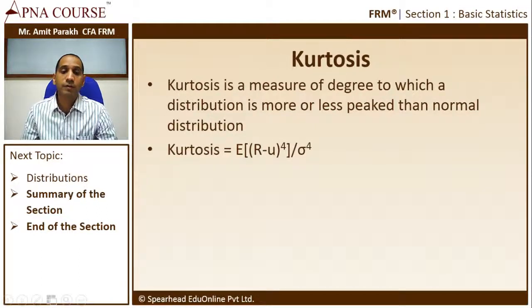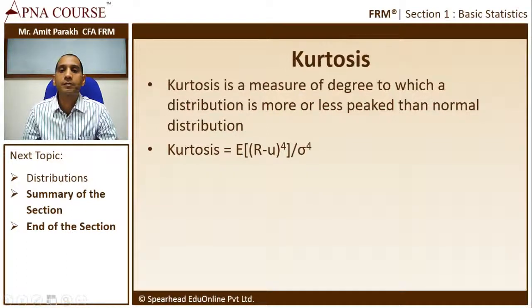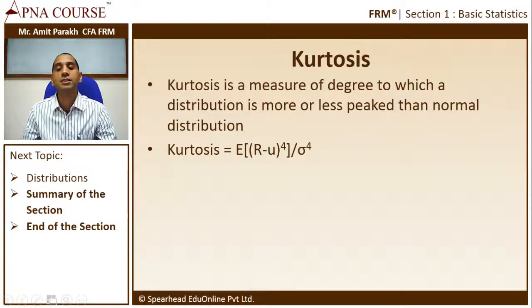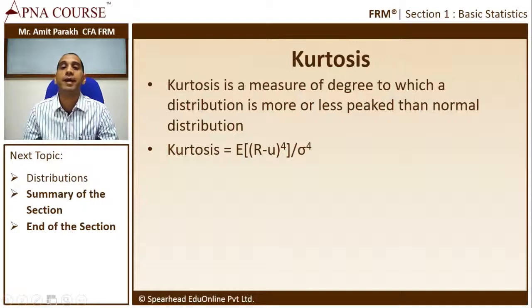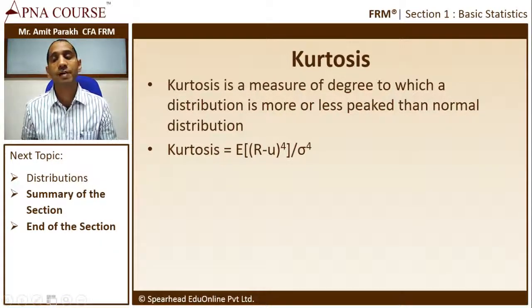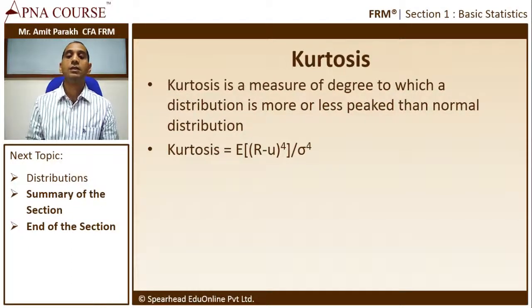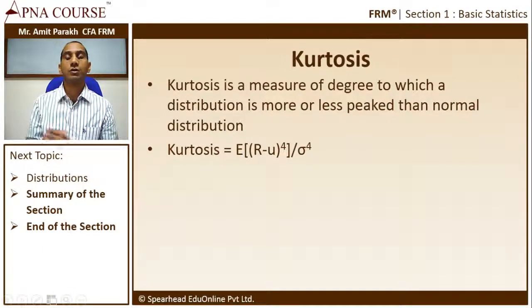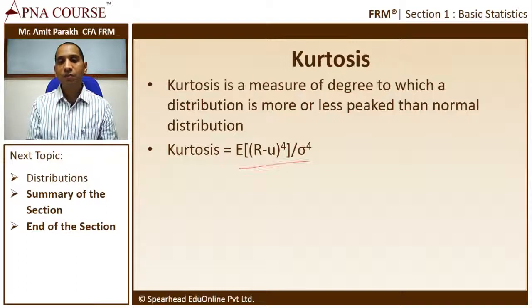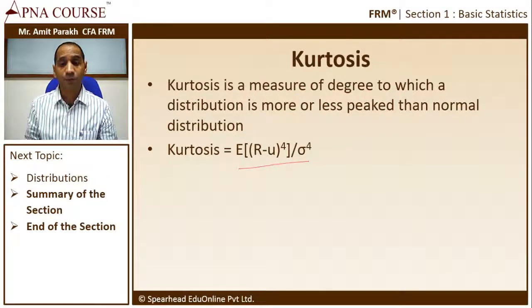How is kurtosis measured? Looking at the progression: summation x/n, summation (x minus mu) squared by n, summation (x minus mu) cubed by n, and for kurtosis: summation (x minus mu) raised to the power 4 divided by n. So we have the expected value of (x minus mu) raised to the power 4, divided by standard deviation to the power 4, because that gives a better sense of the coefficient of kurtosis. This expression will always assume a positive value — it will never be negative.